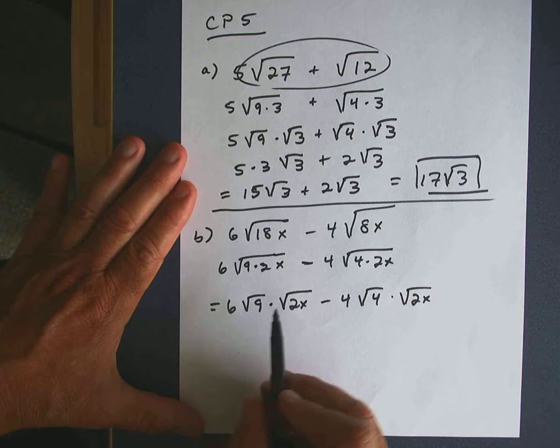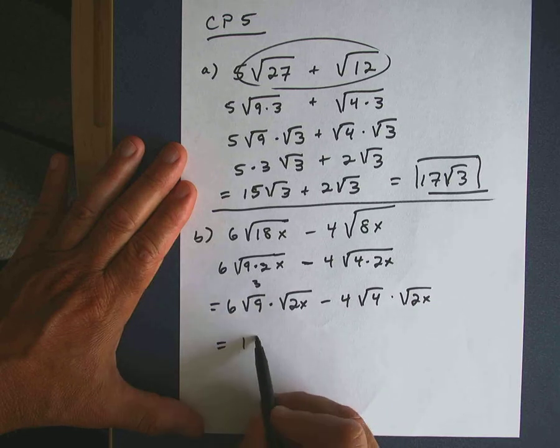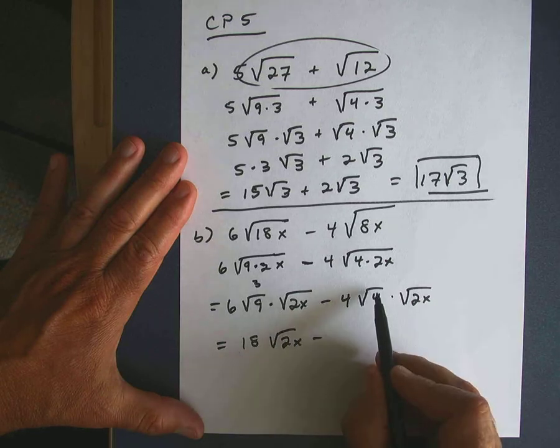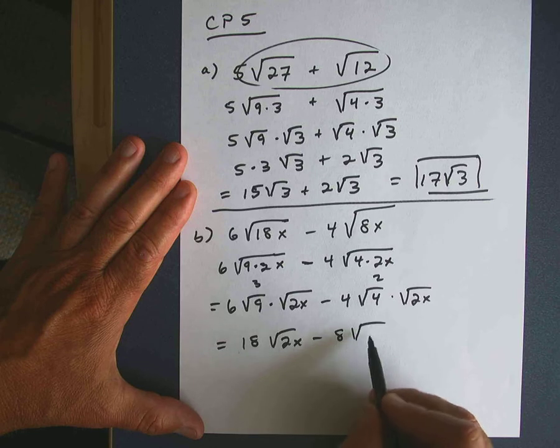The square root of 9 is 3. 6 times 3 is 18, so you get 18 times the square root of 2x. The square root of 4 is 2, so we have 4 times 2, which is 8 times the square root of 2x.